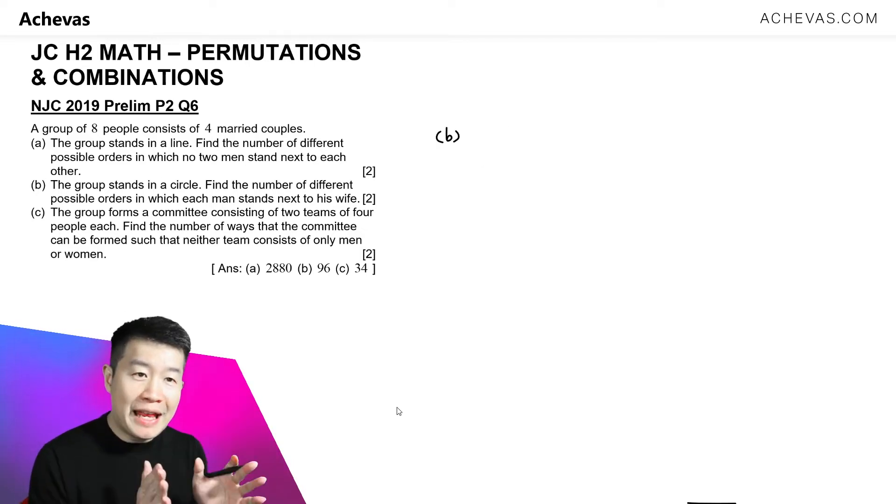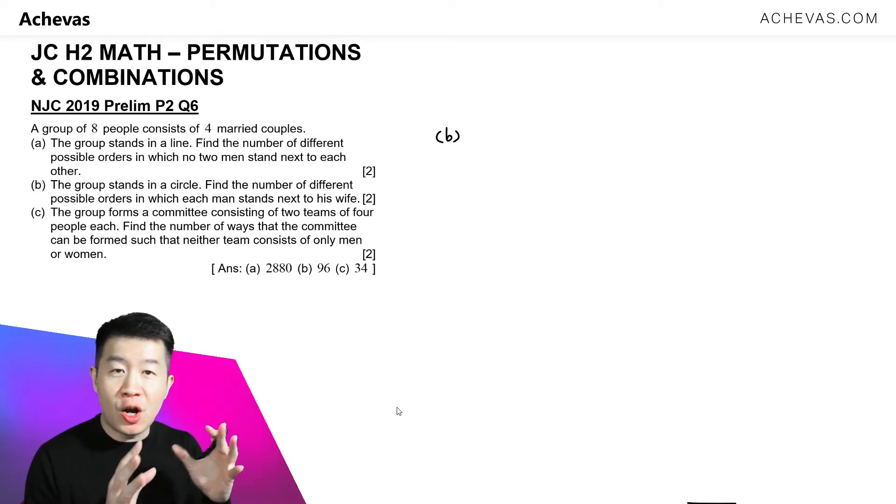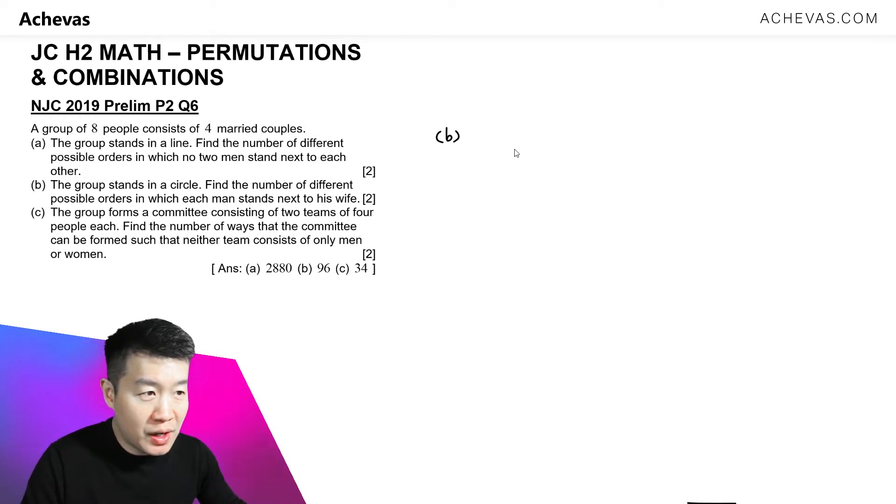Now, these eight people are going to be arranged in a circle such that the men are always going to be standing beside the wife. So for this circle, we will make sure that a man stands beside the wife. So I will form one group for this.